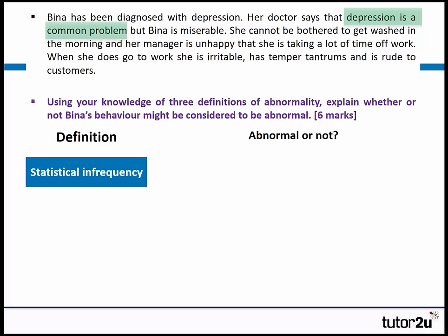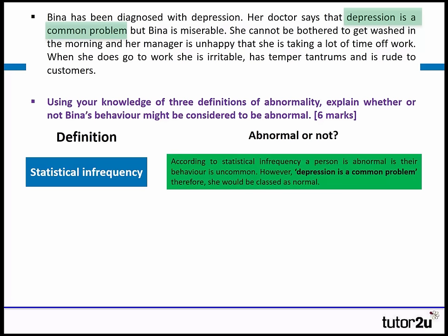The second part of the question asks us to explain whether or not Bina's behaviour should be considered abnormal according to that definition. So we might say: according to the statistical infrequency definition, a person is abnormal if their behaviour is uncommon. However, 'depression is a common problem' — therefore, under this definition, she should be classed as normal.